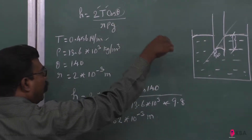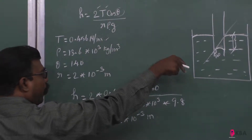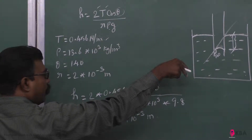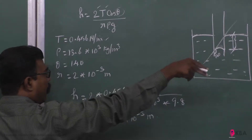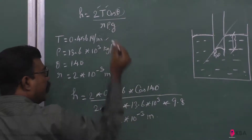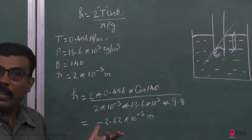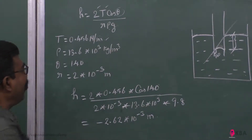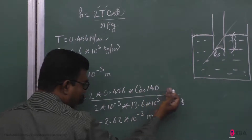R is 2 mm, rho is 13.6 × 10³ kg per meter cube, g you already know. Just substitute these values into the formula.